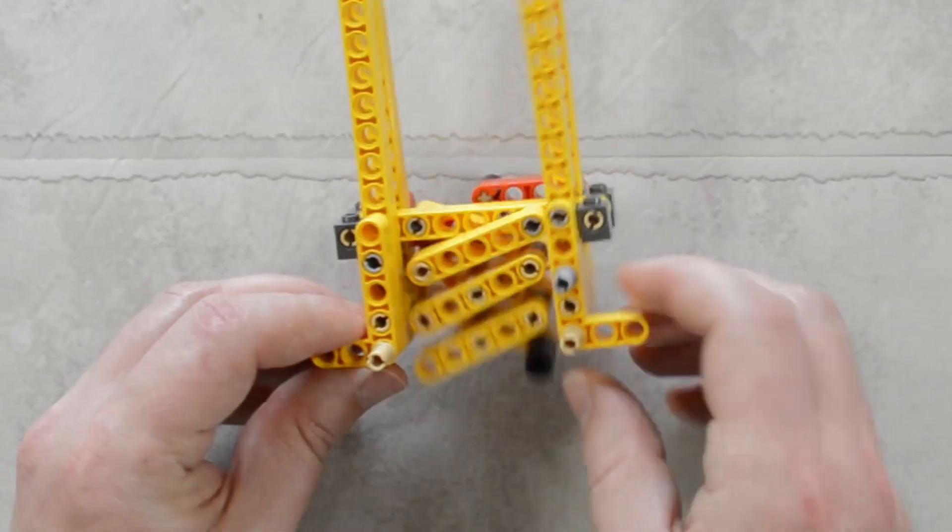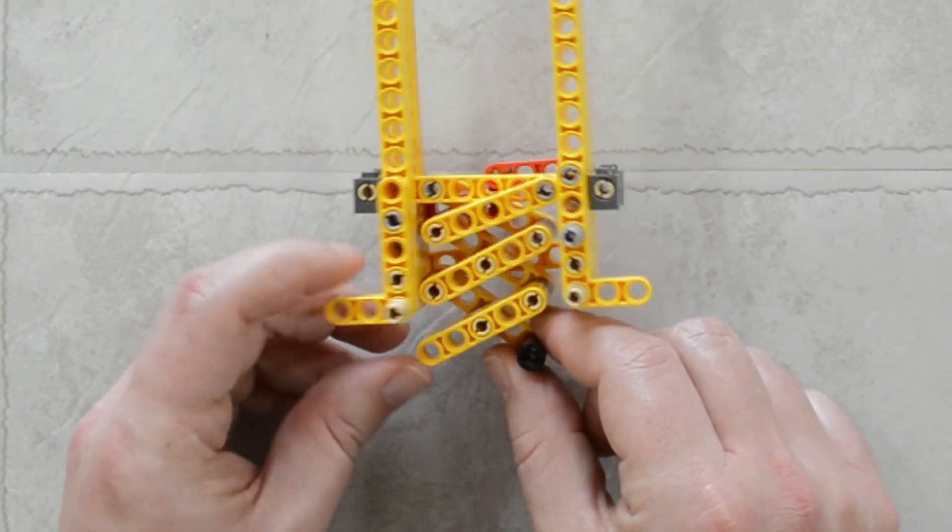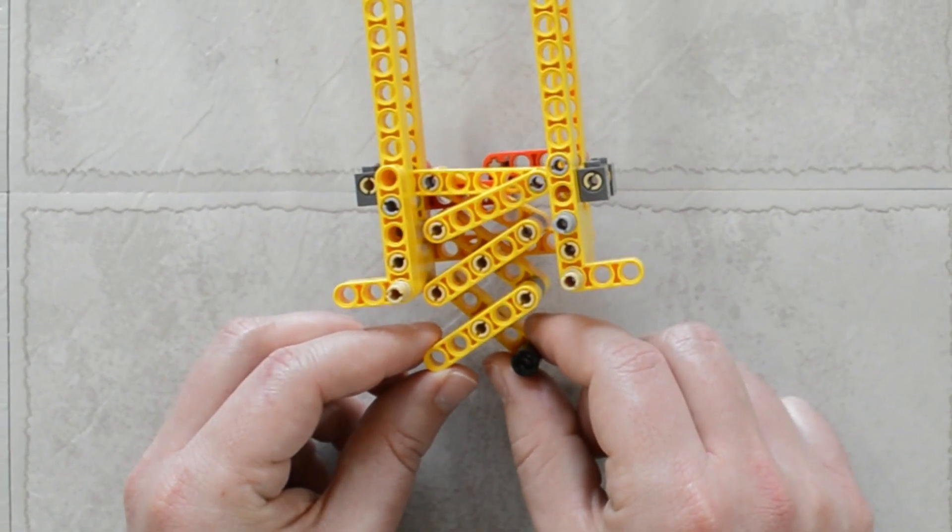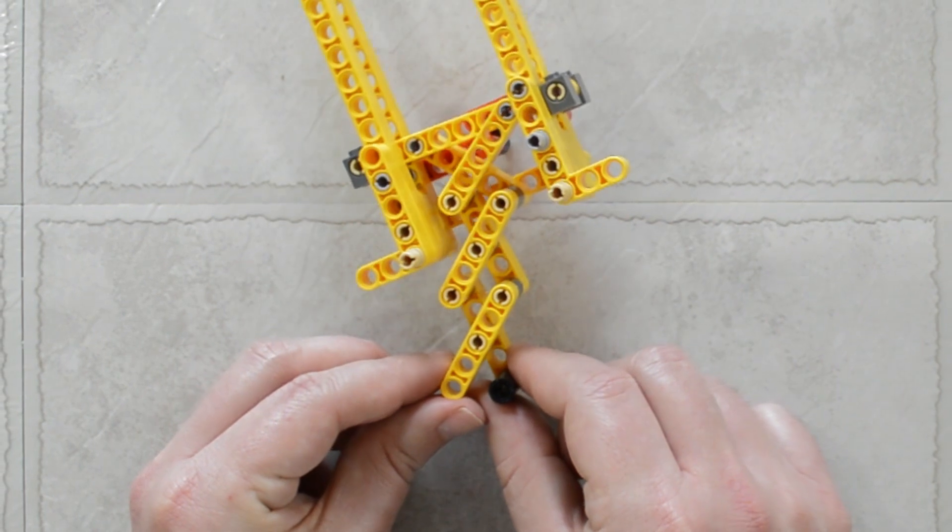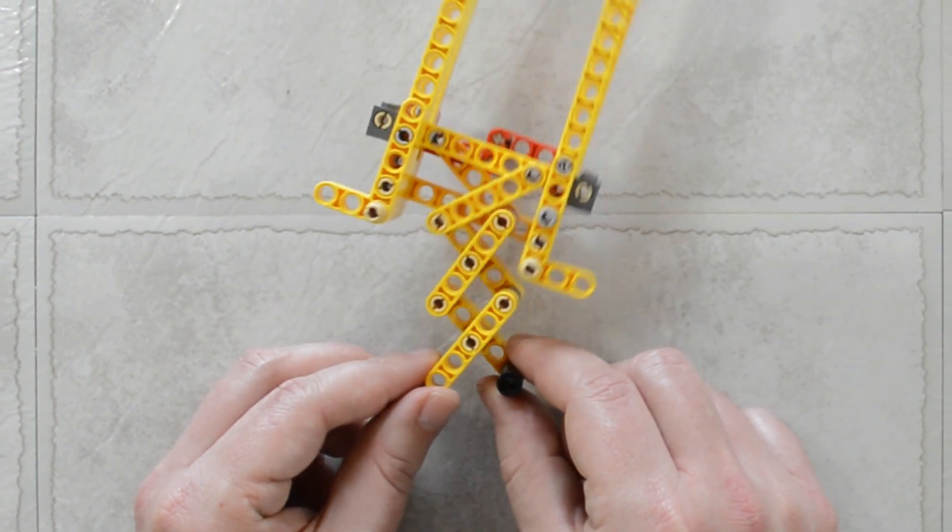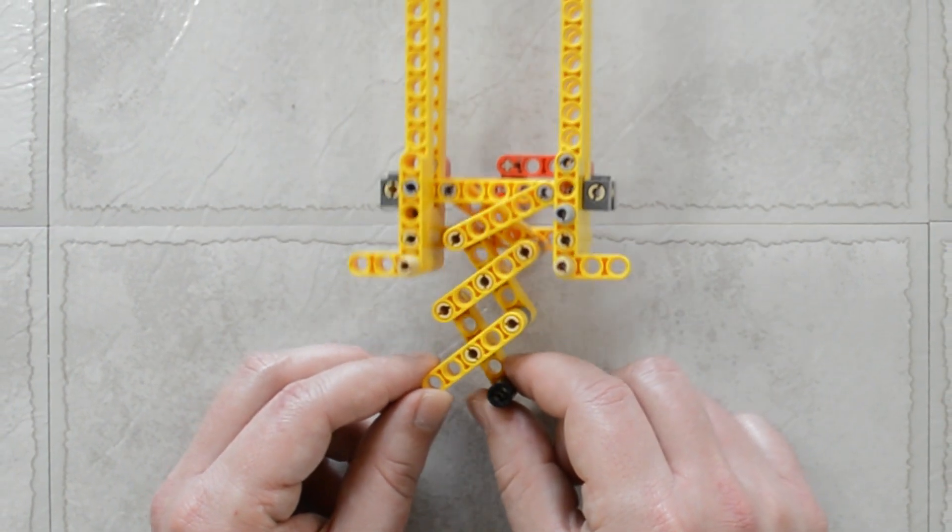So here we have the actual scissor lift part, and as I said, as we pull these two ends together, those sections extend out.